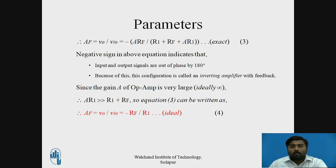The negative sign in the equation indicates that the input and output signals are out of phase by 180 degrees. Because of this, the configuration is called an inverting amplifier with feedback. Since the gain A of the op-amp is much greater — ideally infinite — the term A·R1 is much greater than (R1 plus RF). So the denominator simplifies to A·R1, giving the ideal equation: AF equals VO divided by VIN equals minus RF divided by R1.